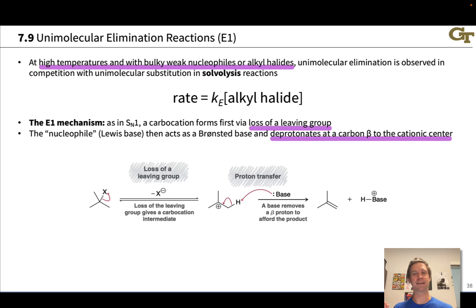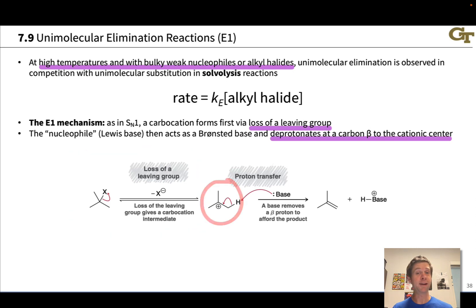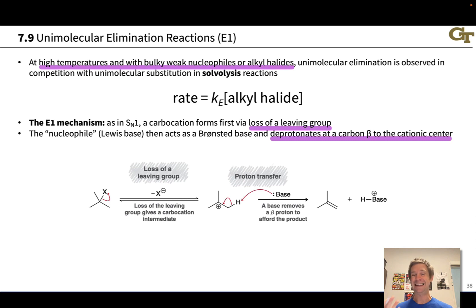Then the nucleophile — or base — acts as a Brønsted base and deprotonates at a carbon that is beta to the cationic center, so directly adjacent to the cationic center. In the first step, we have loss of a leaving group, which forms a carbocation intermediate. In the SN1 mechanism, this would be attacked by a nucleophile directly at the cationic center to produce a substitution product. In the E1 mechanism, instead, the nucleophile — or Brønsted base — deprotonates at a carbon adjacent to the cationic center.